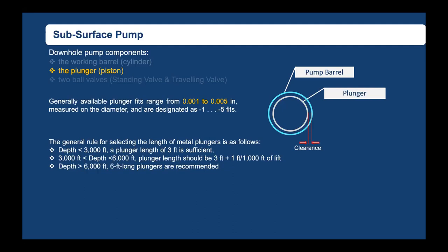To maintain high pumping efficiency, we need to keep the rate of slippage at a minimum. Generally this clearance ranges from 0.001 to 0.005 inches, designated as minus-1 to minus-5 fit. Higher viscosity means less slippage. Pump slippage is also proportional to plunger length. As a general rule: for pump depth less than 3,000 feet a 3-foot plunger is sufficient; for 3,000–6,000 feet, add one extra foot per every 1,000 feet; for depth greater than 6,000 feet, a 6-foot plunger is recommended.